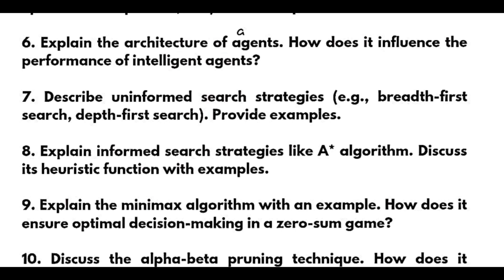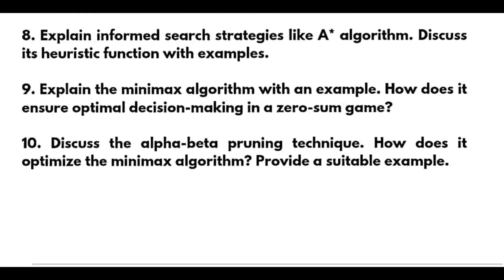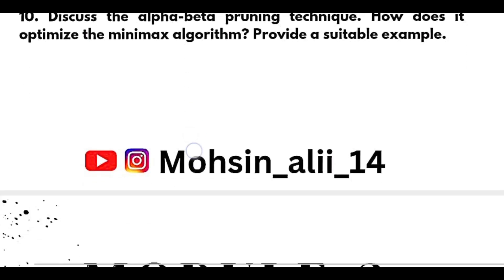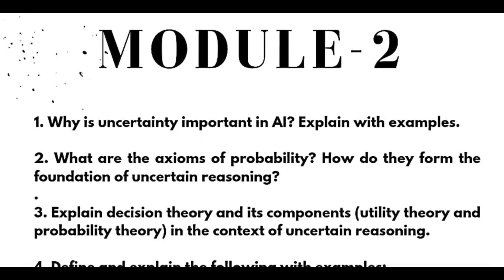Explain the minimax algorithm with an example and discuss how it ensures optimal decision making in a zero-sum game. The last question from Module 1 is: discuss the alpha-beta pruning technique, how it optimizes the minimax algorithm, and provide a suitable example.